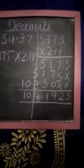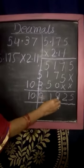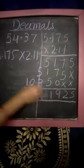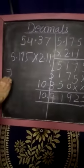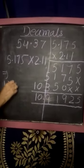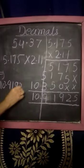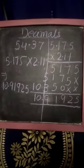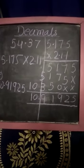Now after 5 digits: 1, 2, 3, 4, 5. The answer is 10.91925. This is the multiplication of decimals.